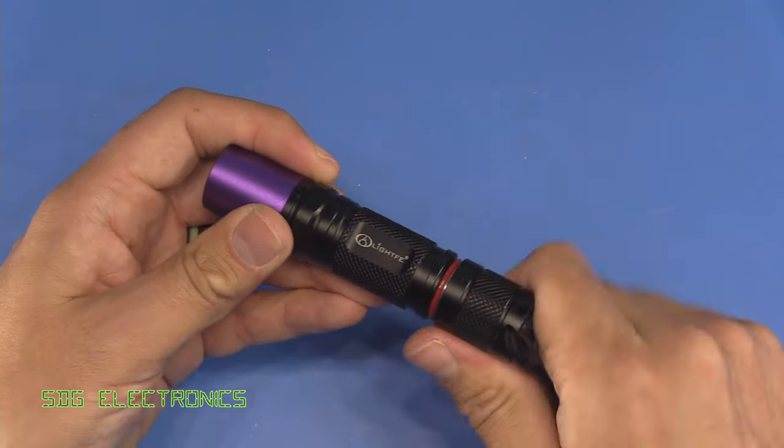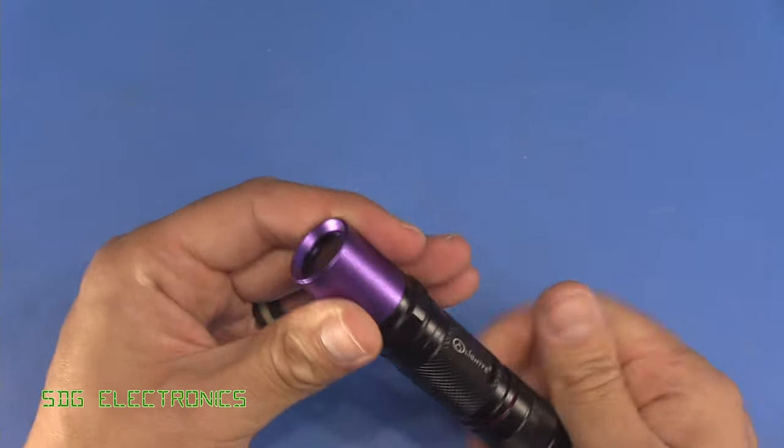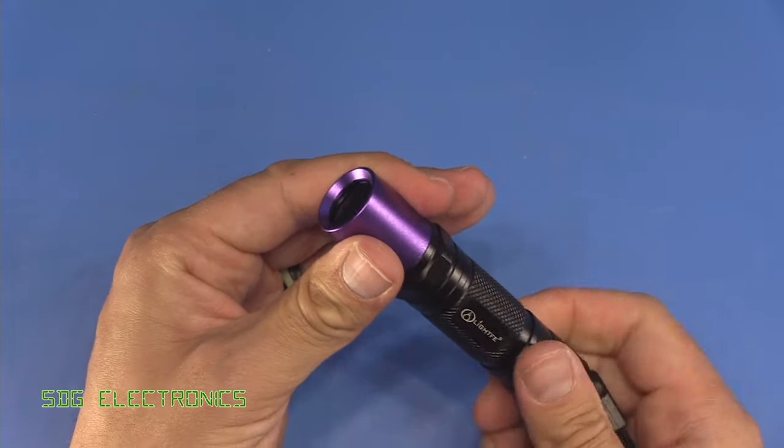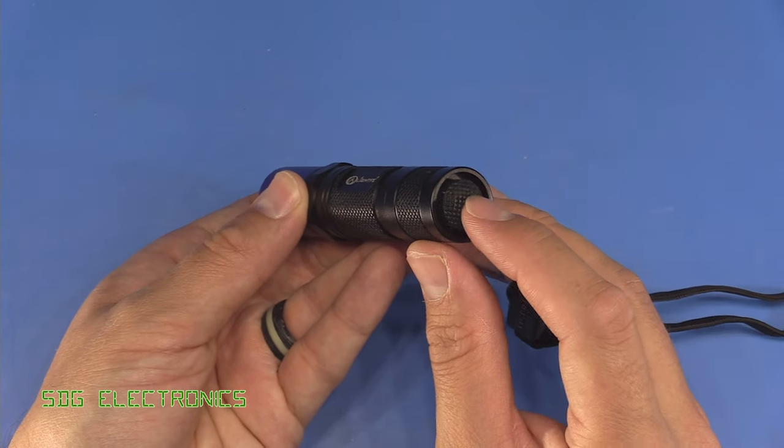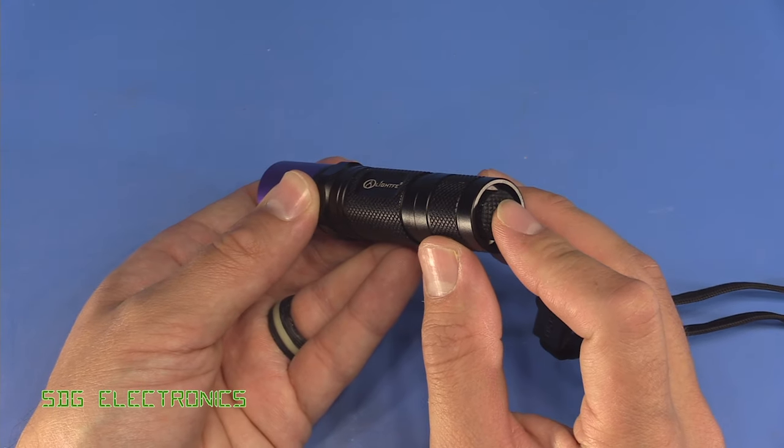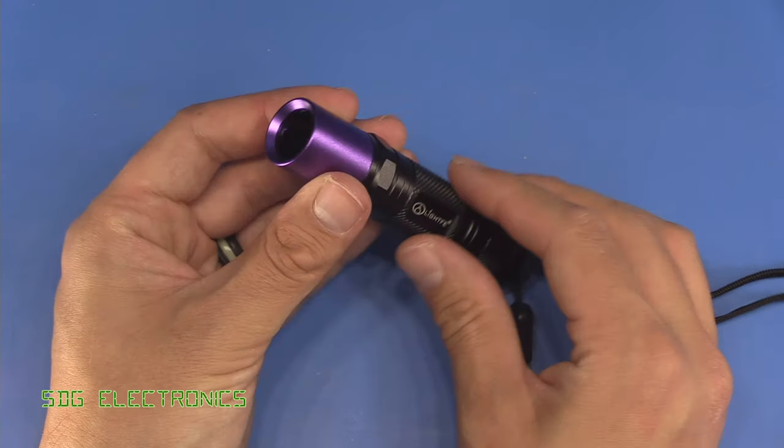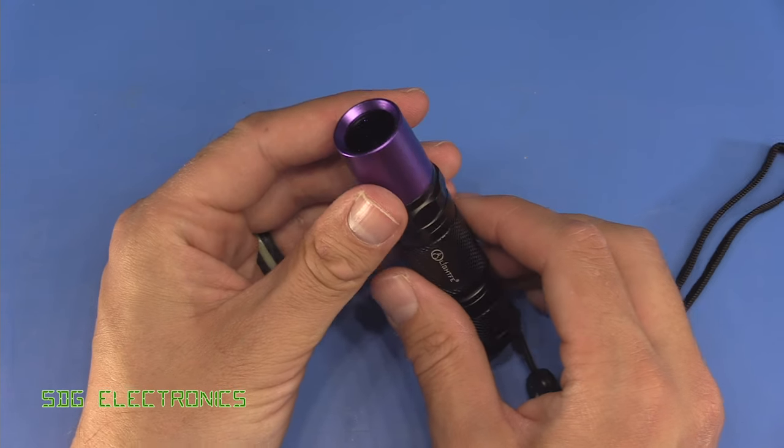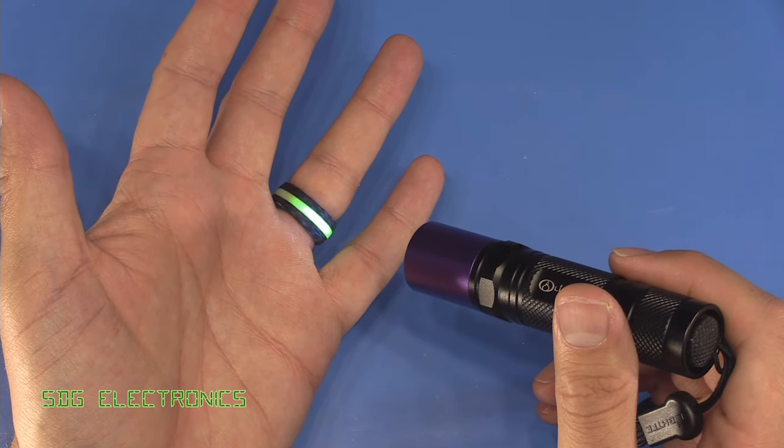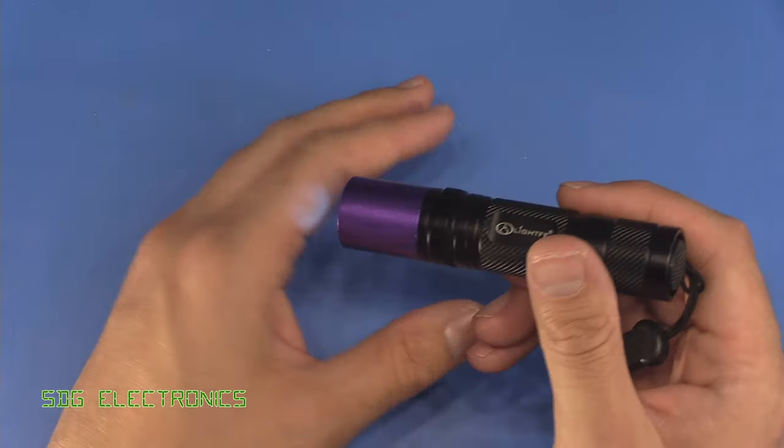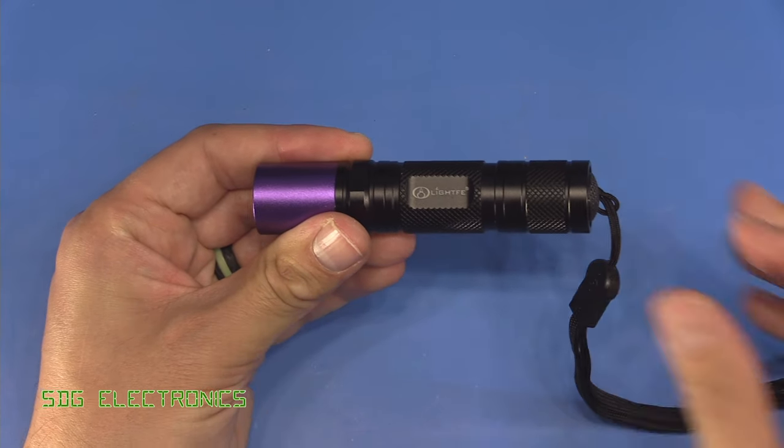You just screw the end back on. There's no focus adjustment or anything like that at this end so it's just a fixed beam and then you've got the power button at the end. That's just a clicky on-off switch and it really is quite bright. You shouldn't really look into it with the naked eye but it causes fluorescent items to fluoresce quite nicely from quite a distance, so it really is quite bright and a nice form factor.